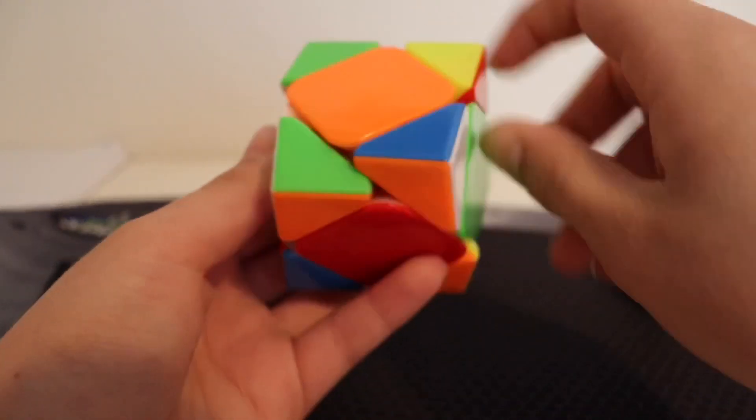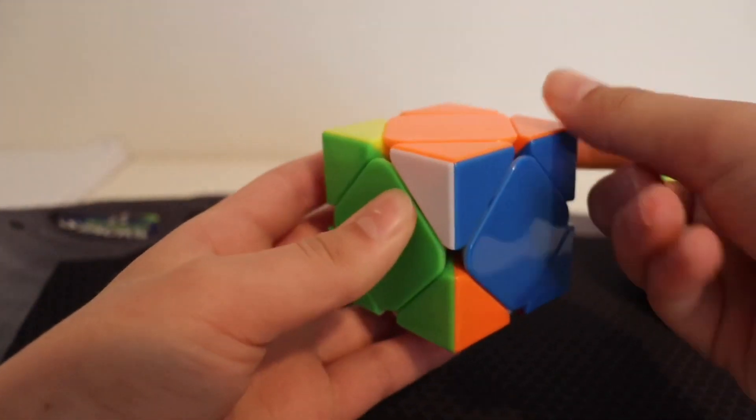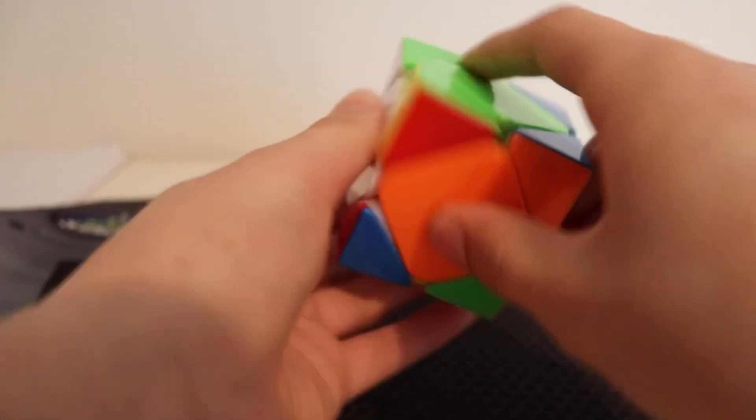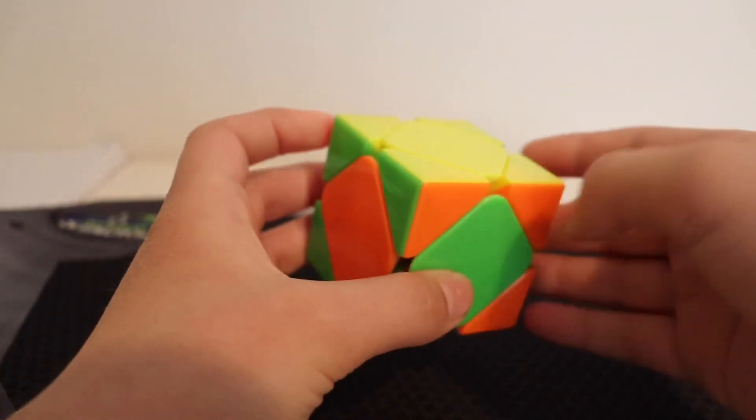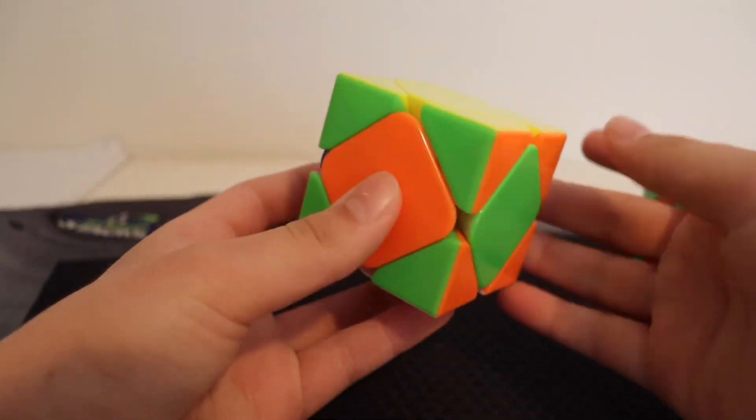So, one, two, three, and then it'll be one move like that. So, again, it's a conjugate Z-perm, and I wouldn't really recommend it.